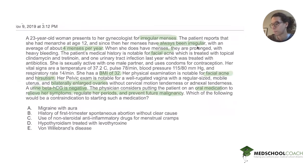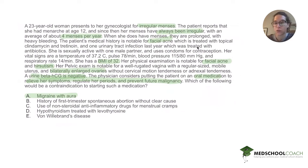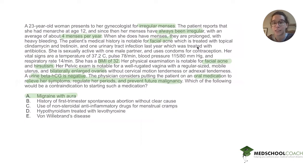So the answer is A: migraine with aura. There's no contraindication with a history of spontaneous abortion unless it was caused by a known thrombophilia — but a first trimester spontaneous abortion without clear cause is not a contraindication. NSAIDs are not a contraindication. With hypothyroidism on levothyroxine, you may need to adjust the levothyroxine dose once starting estrogen-containing OCPs, but that's not a contraindication — just something to be aware of. And von Willebrand's disease is an inherited bleeding disorder, not a clotting disorder. If it were an inherited clotting disorder like factor V Leiden, that would be different, but bleeding disorders are not a concern here.